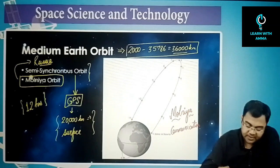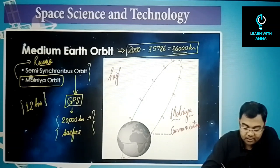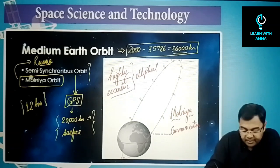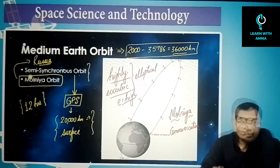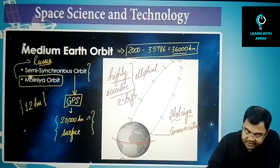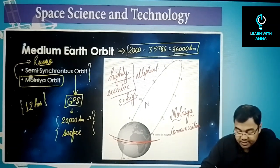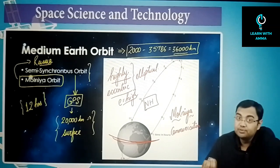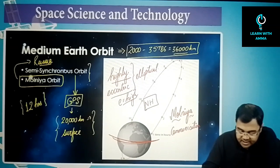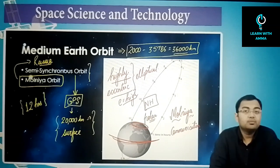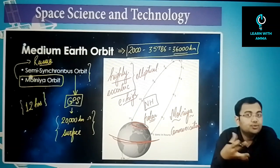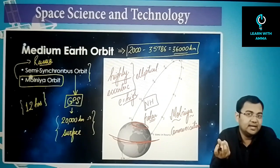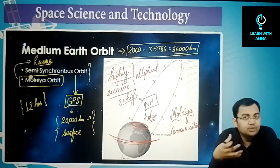The Molniya orbit is a highly eccentric — meaning highly elliptical — orbit. Russia designed it this way so that the orbit remains majorly in the northern hemisphere. Since Russia is located in the polar regions, the equatorial orbit was not useful, so this special elliptical orbit was invented for their communication satellites.